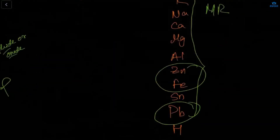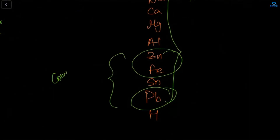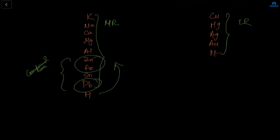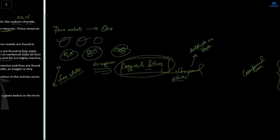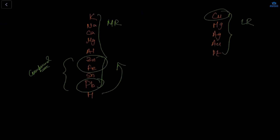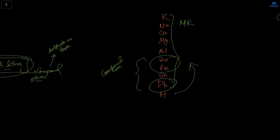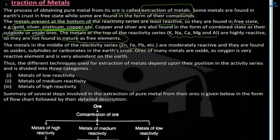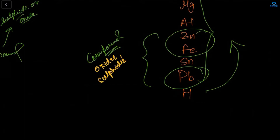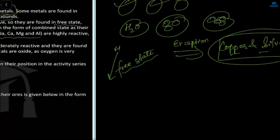Above hydrogen all metals are found in compound form; below hydrogen all are found in free state, with only two exceptions — copper (Cu) and silver (Ag). These three middle metals (Zn, Fe, Pb) combine with oxides, sulfides, and carbonates.